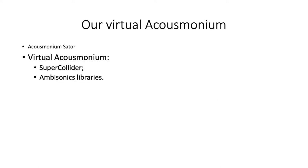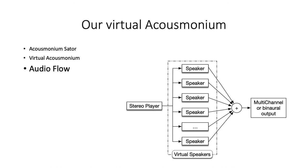The virtual acusmonium was developed with the SuperCollider programming language and relies on spatialization libraries based on ambisonics. The basic idea for the recreation of an acusmonium was to emulate the desired number of speakers, place them in a virtual space, and colour the frequency response based on the position and type of speaker. Each of these speakers receives a stereo audio signal, and through a series of equalization, delays, reverberation, and spatialization, they will emulate the speakers chosen in the virtual space.